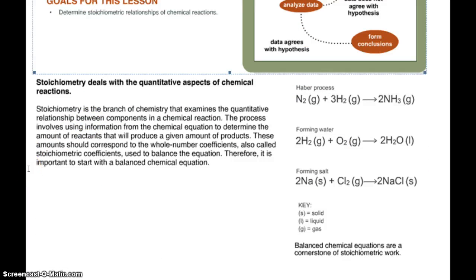Stoichiometry deals with the quantitative aspects of chemical reactions. Stoichiometry is the branch of chemistry that examines the quantitative relationship between components in a chemical reaction. The process involves using information from the chemical equation to determine the amount of reactants that will produce a given amount of products. These amounts should correspond to the whole number coefficients also called stoichiometric coefficients used to balance the chemical equation. Therefore it is important to start with a balanced chemical equation.